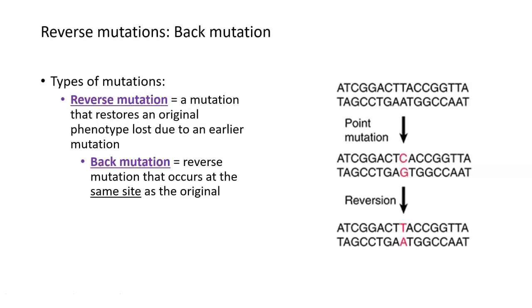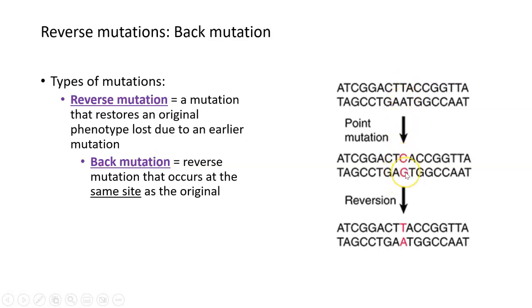There are some situations where a mutation can actually be reversed — a mutation can come in and restore the original phenotype that was lost due to an earlier mutation. There are two different ways a reverse mutation can work: a back mutation and a suppressor mutation. In the situation we just described, a forward mutation changed the DNA sequence from wild type (T and A) to mutant (C and G), and that change in the DNA caused a phenotype.